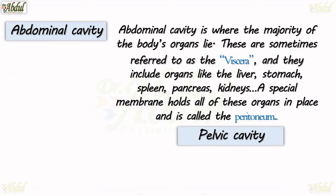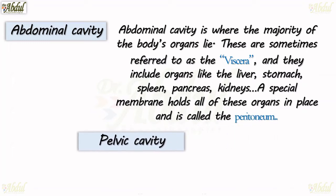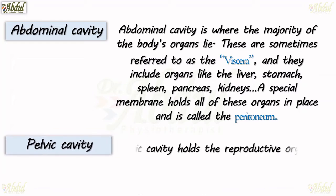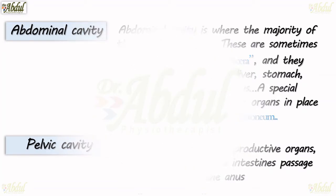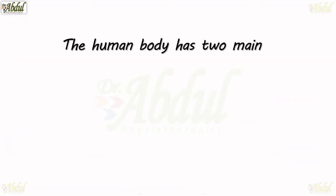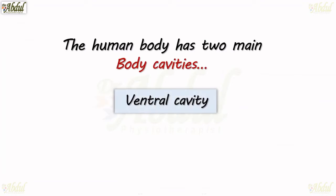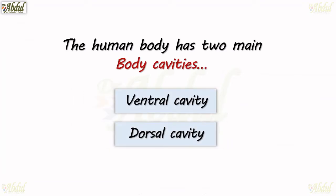The pelvic cavity holds the reproductive organs and bladder, and allows the intestine passages to the anus. The human body has two main body cavities — the ventral cavity that we have seen, and now let's look at the dorsal cavity.